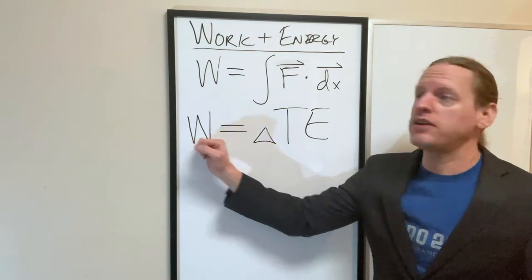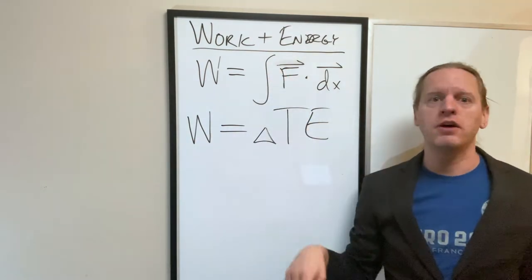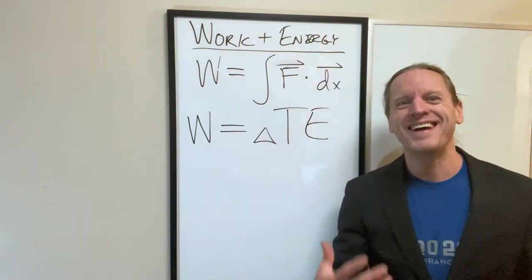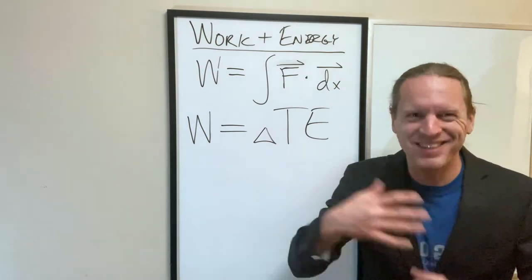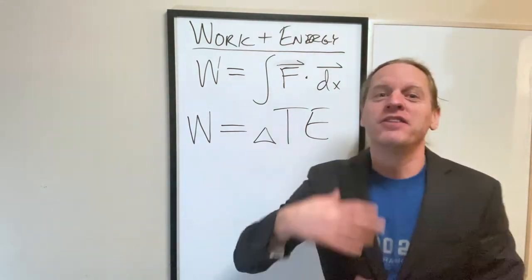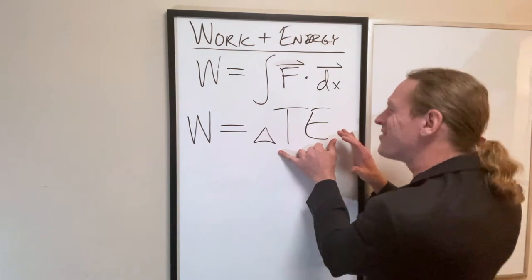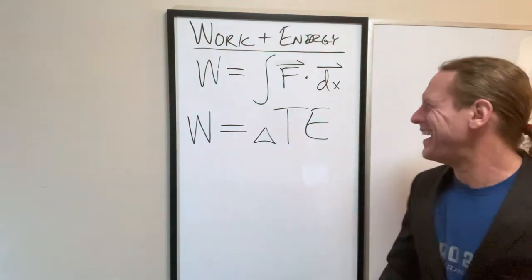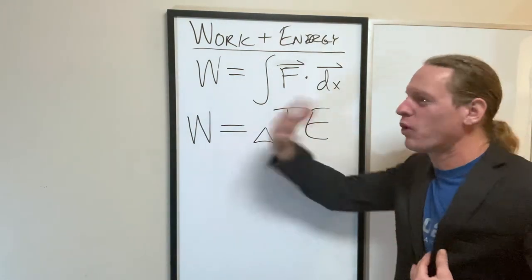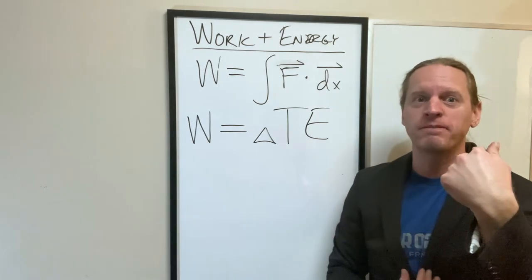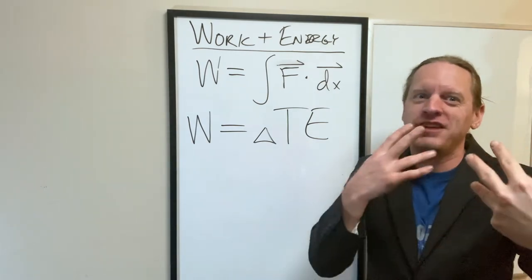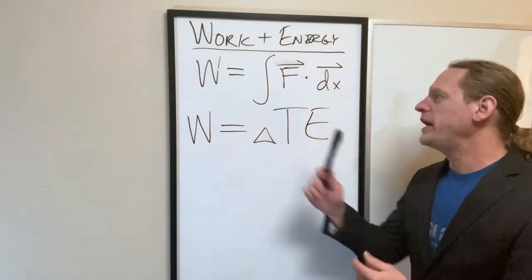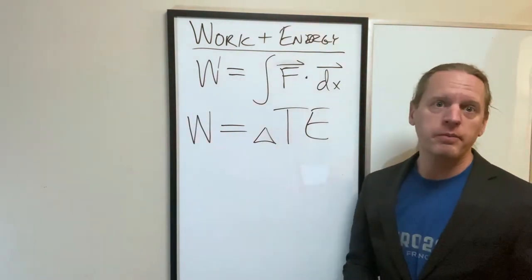When we do work on an object, we transfer energy to that object if positive, or we take energy away from it if negative. Now we go around and we define energy. And this is why I think it's hilarious. So, we've defined work as this. Now we go and define energy as the ability to do work on an object. How bizarre is that? That's literally what we do in physics. So we define work as the ability to change energy. And we define energy as the ability to do work on an object. Go figure. So anyway, that is what the work energy principle says.